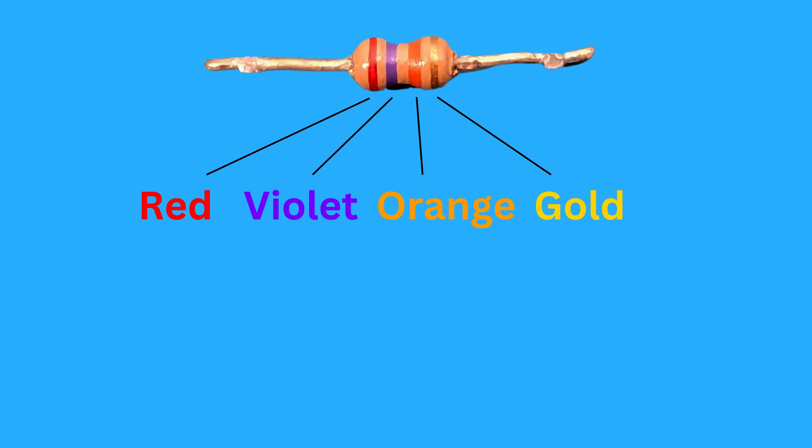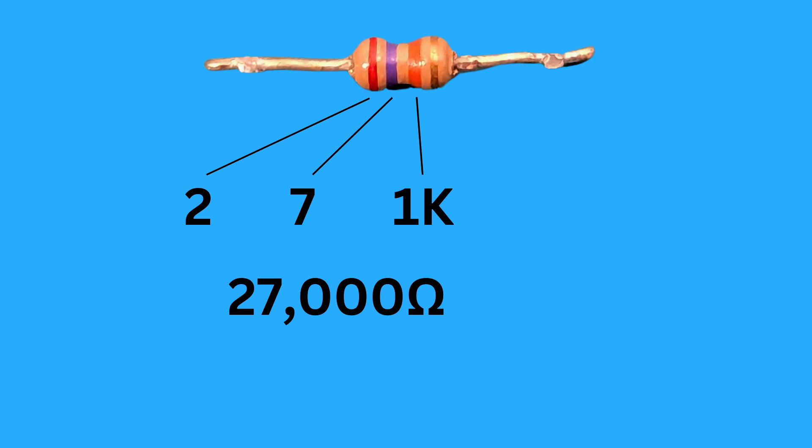Here's how we solve it. Red has a value of 2. Violet has a value of 7. That gives us 27. Orange is the multiplier, which is 1,000, so 27 times 1,000 equals 27,000 ohms.